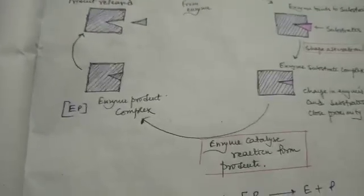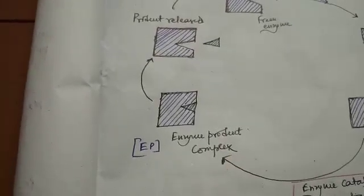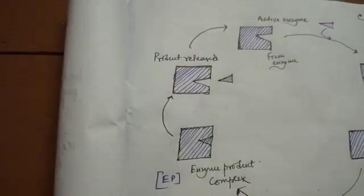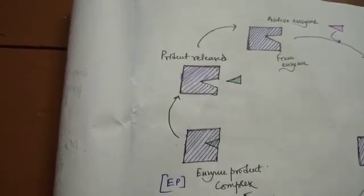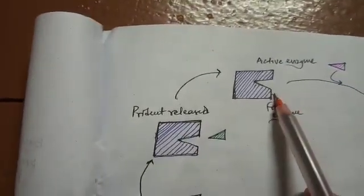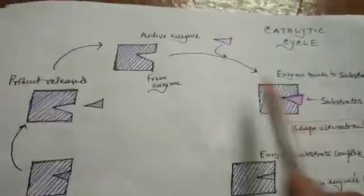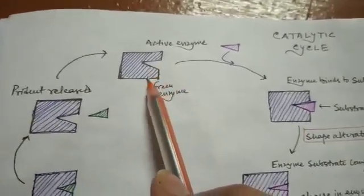Through the chemical reaction, they will form the product. The product will remain associated with the enzyme and form the enzyme-product complex. Within a short time, this product will be dissociated — the product will be released from the enzyme and again the enzyme will be free. So basically, the first step was the free active enzyme.